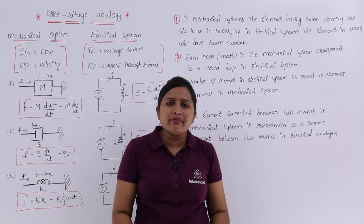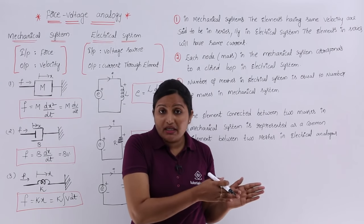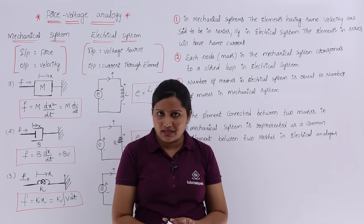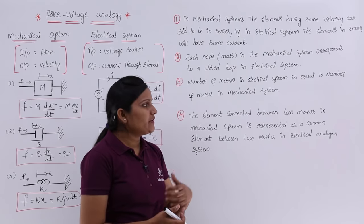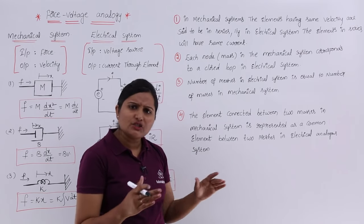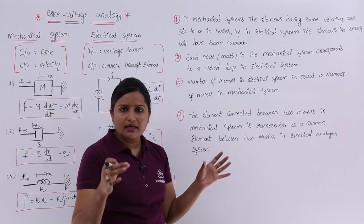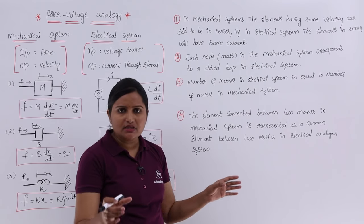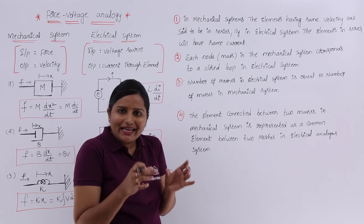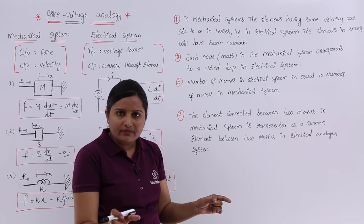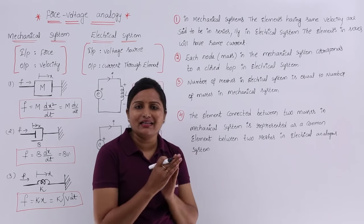The third point: the number of meshes in the electrical system is equal to the number of masses in the mechanical system. A mesh is a closed loop, so however many masses there are in the mechanical system, that many meshes will be in the electrical system. The fourth point: elements connected between two masses in the mechanical system are considered as common elements shared between meshes in the electrical network.